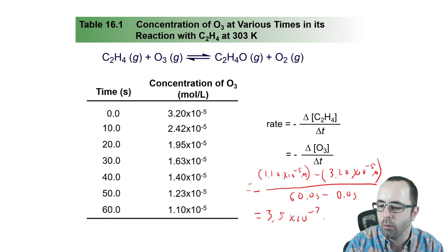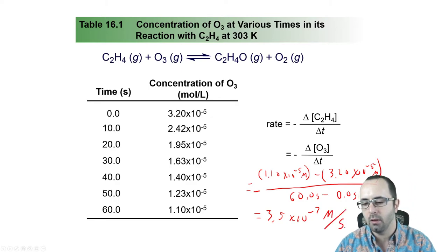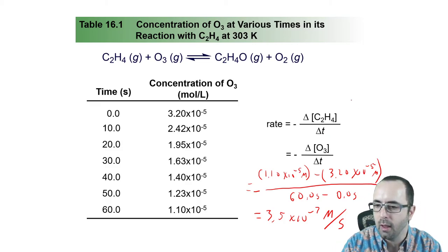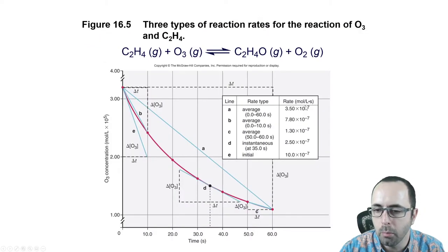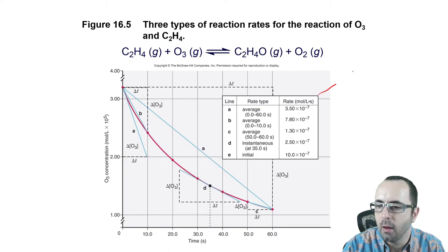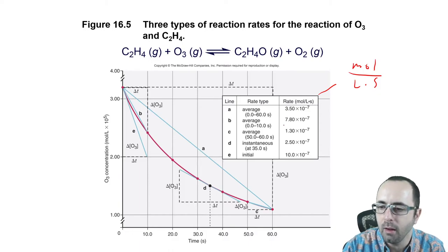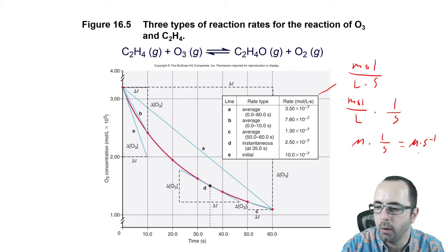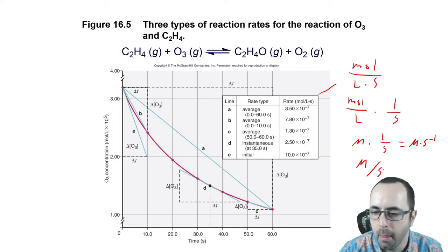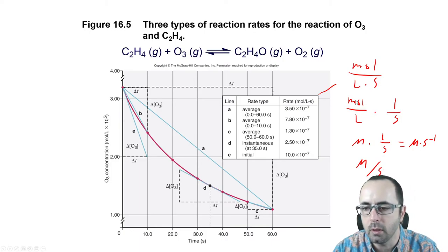Notice the units for rate: rates are always in molarity per second, which can also be written as M·s⁻¹. Your textbook often writes this as moles per liter per second, or mol/(L·s). Moles per liter is molarity, so that's molarity times 1/second, which equals M·s⁻¹. All of these mean the same thing.